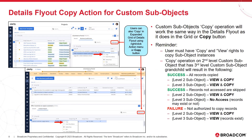We've also extended copy action support from the details fly out. Here, you'll be able to copy custom sub-object instances. Just like you can in the grid, to perform the copy operation you'll just highlight the sub-object instance and then with the right click menu, you'll select copy. And whenever you expand the details fly out into the grid, you'll actually have the right click copy action available there as well.